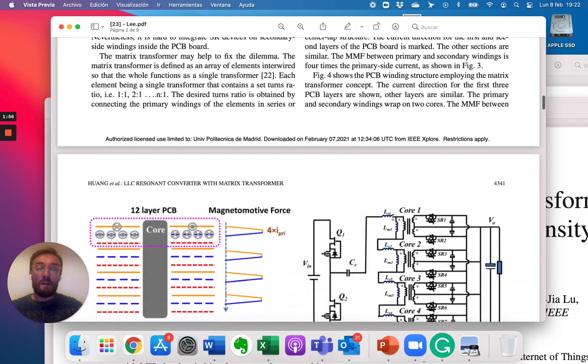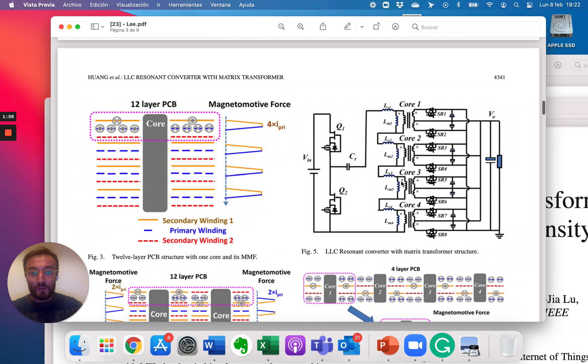Then they propose this structure where instead of one transformer with several outputs in parallel, they have four transformers with four primaries in series and four secondaries in parallel.